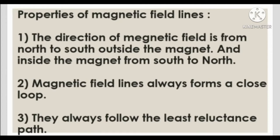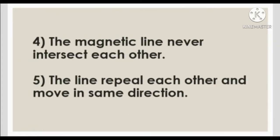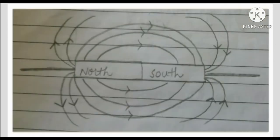Magnetic field lines always follow the path of least reluctance. Magnetic field lines never intersect each other. The lines repel each other but move in the same direction.